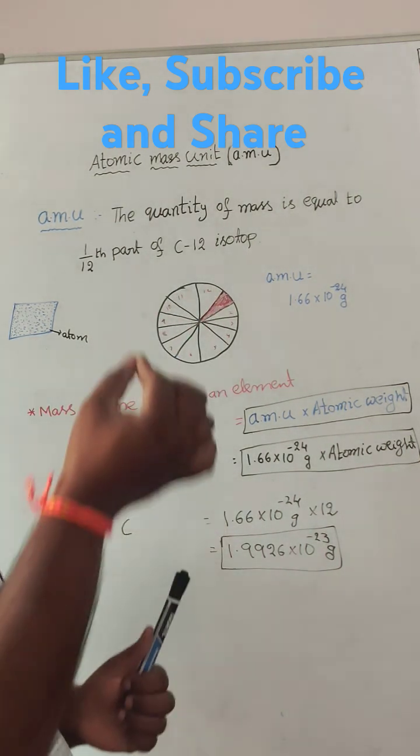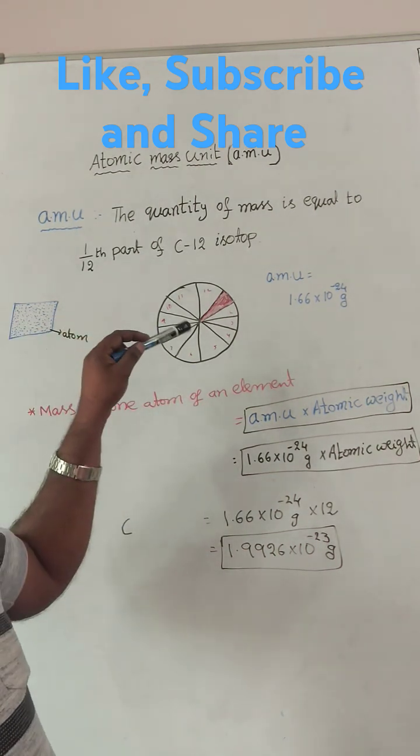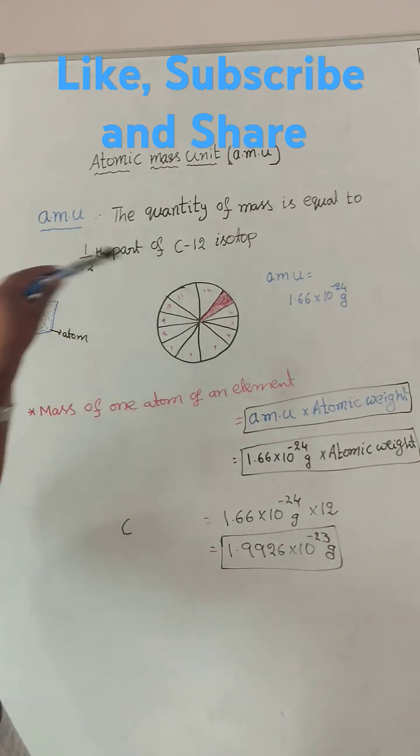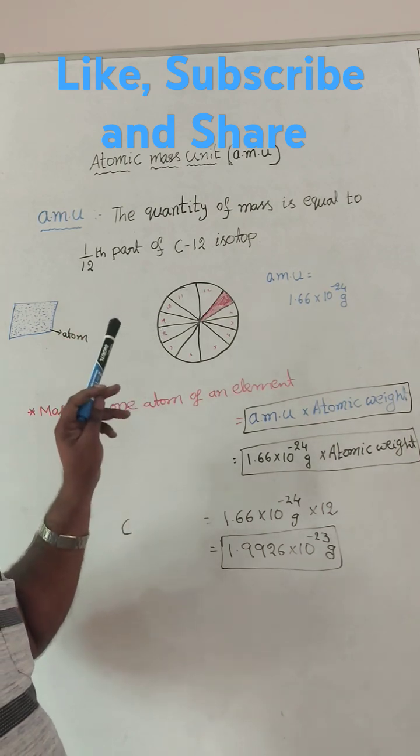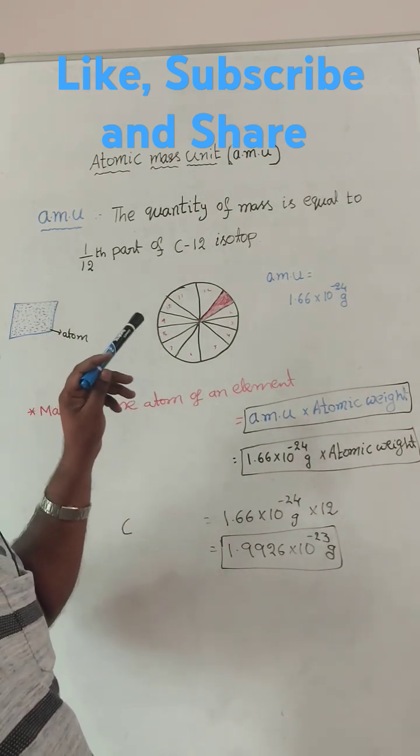In that one small unit, this is only small atom in this element. In that again further divisible 12 parts, as well as 6 protons, 6 neutrons.